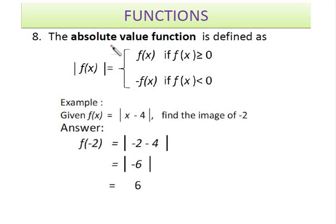Therefore, the absolute value function is defined as |f(x)| equals f(x) if f(x) is greater than or equal to 0, and -f(x) if f(x) is less than 0.